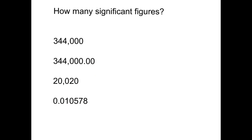Let's look at a few more examples. 344,000 has three non-zero digits and three terminal zeros with no decimal point, so those zeros are not significant — giving three significant digits. The same value written as 344,000.00000 has a decimal point and five terminal zeros, all of which are now significant. So we have five zeros plus three non-zero digits, for eight significant digits total.